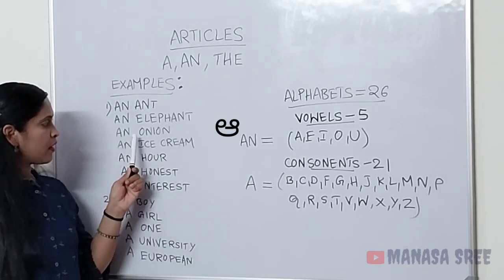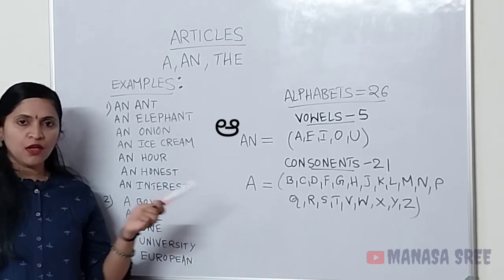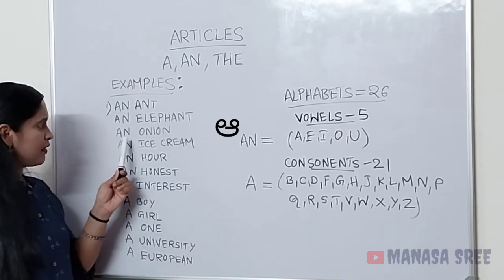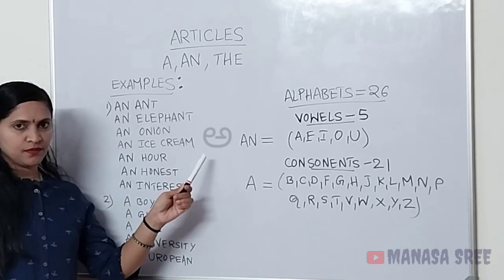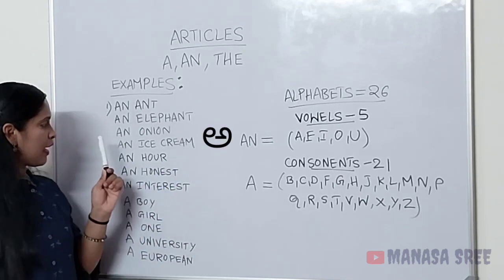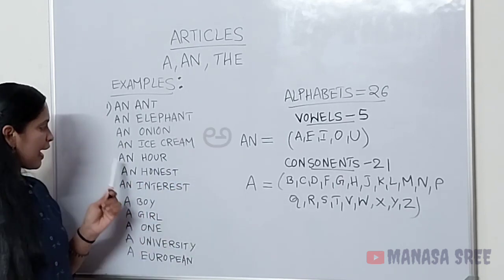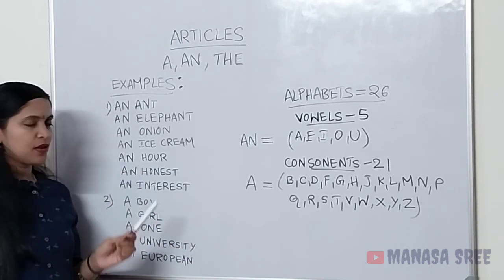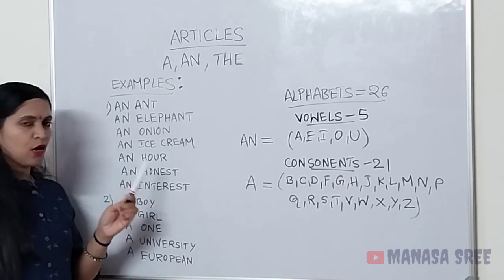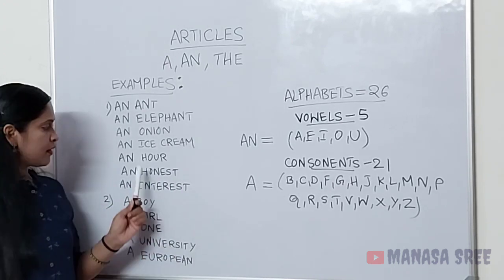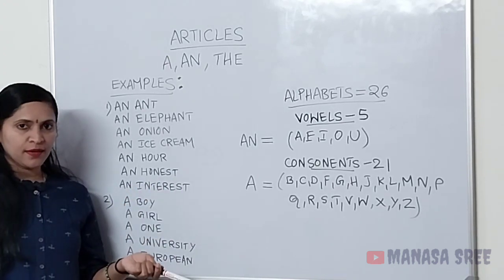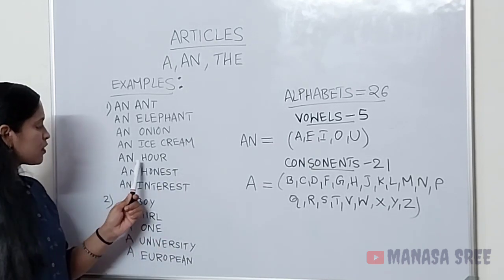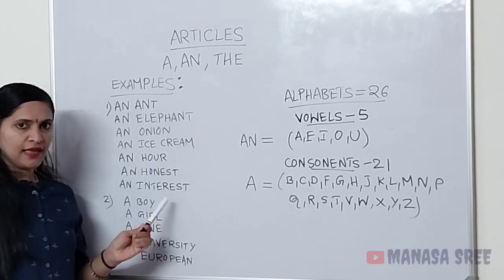An onion — 'o' letter, vowel letter — so 'an' use maatthi vi. An onion. An ice cream — 'i' sound bandhi dhelva — vowel sound — so 'an' use maatthi vi. An ice cream. An hour — friends, 'h' is silent. H is a consonant letter, but the sound we get is a vowel sound — oval sound. An hour — so adhik e 'an' na use maatthi vi.